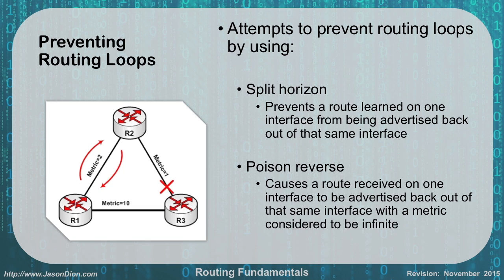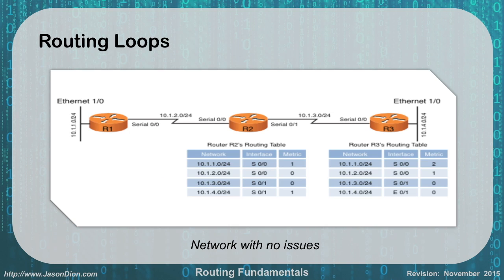Split horizon prevents a route learned on one interface from being advertised back out that same interface. Poison reverse causes a route received on one interface to be advertised back out that same interface, but with a metric so high that no one would ever want to use it. In this example, I have metrics of 1, 2, and 10. Router 3 knows how to get to router 1 two different ways: directly, or through router 2. Because metric 1 is lower than 10, router 3 wants to go via the metric-1 path. Poison reverse puts a block on one interface so it doesn't learn a particular route and create a loop.